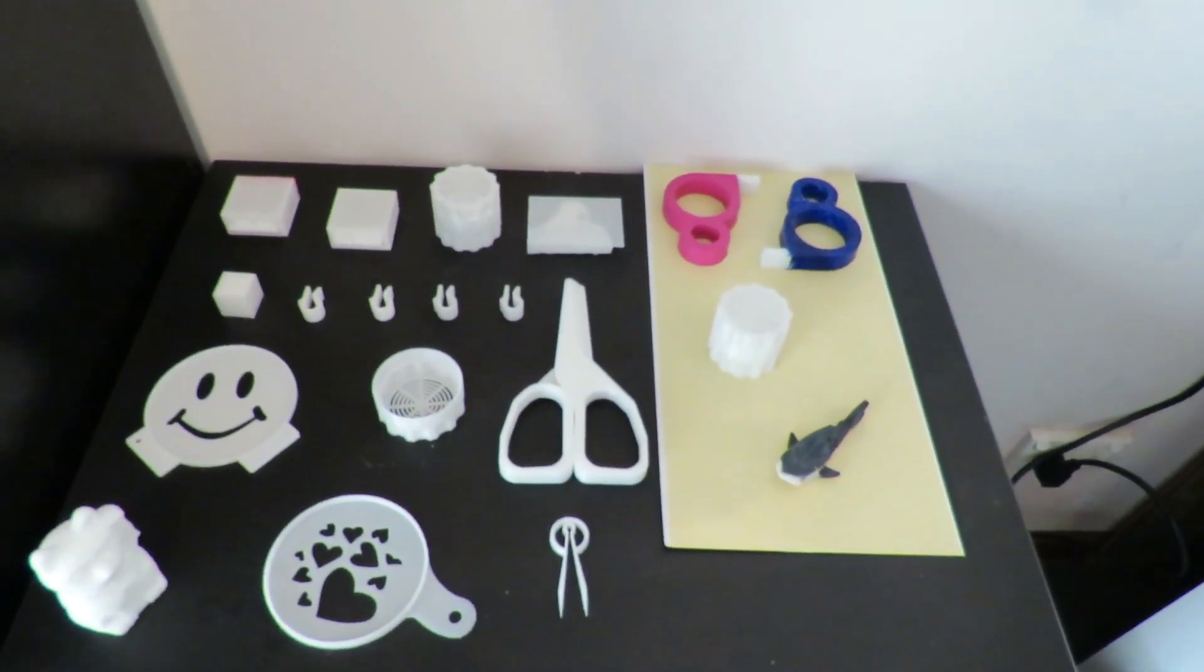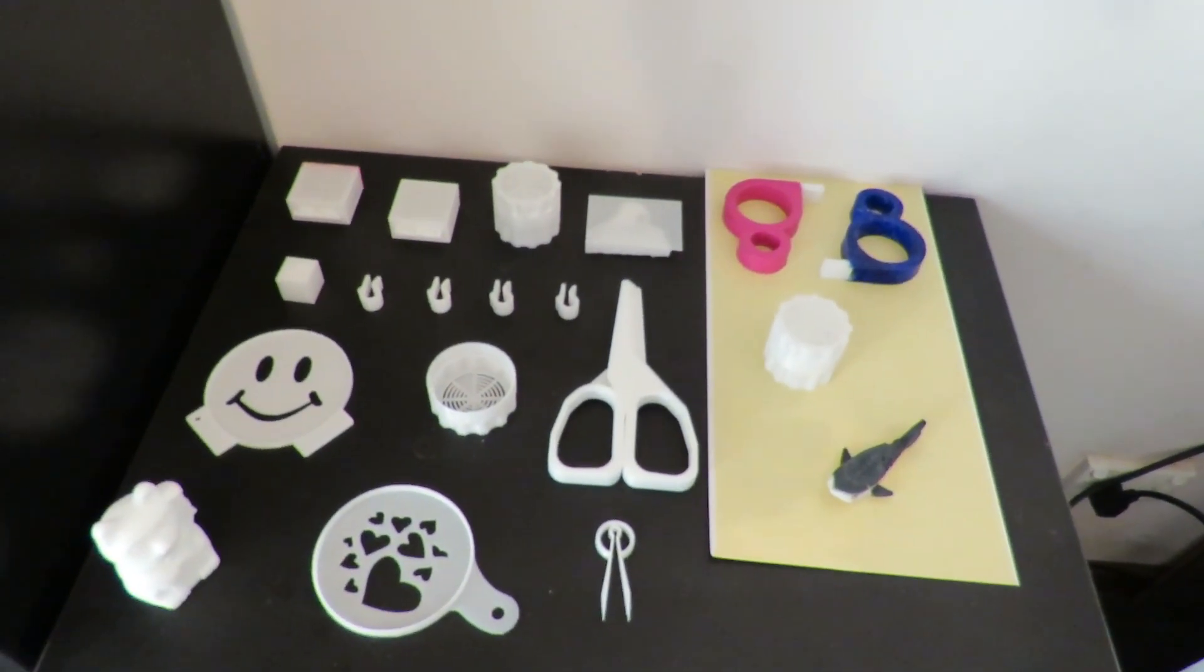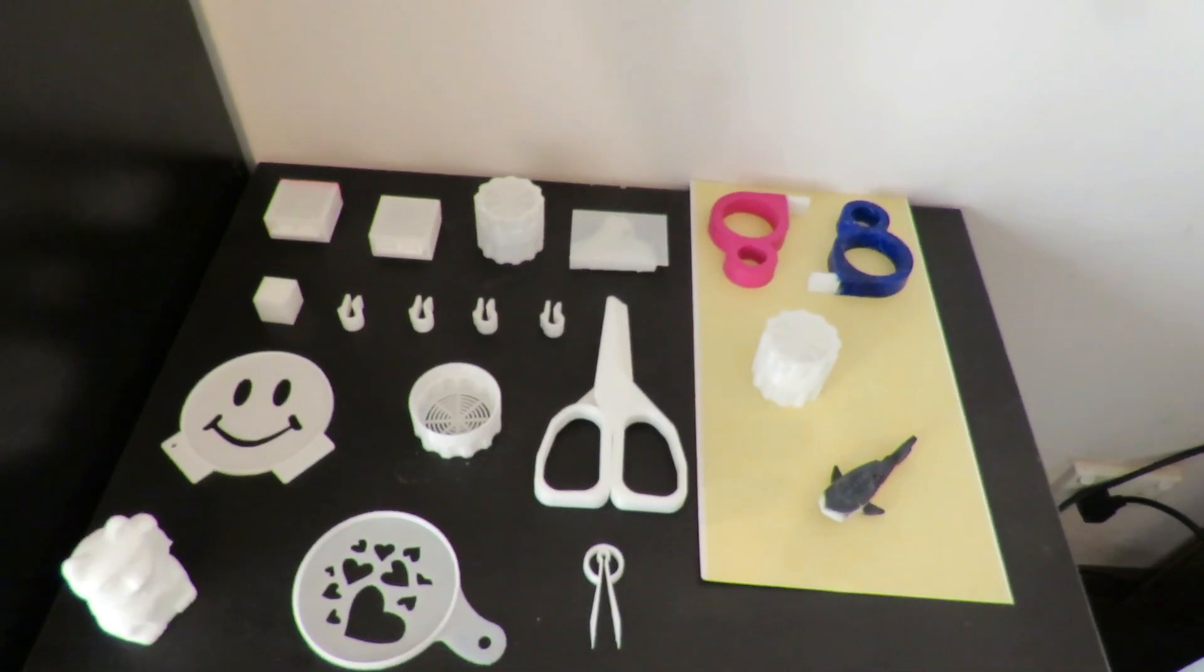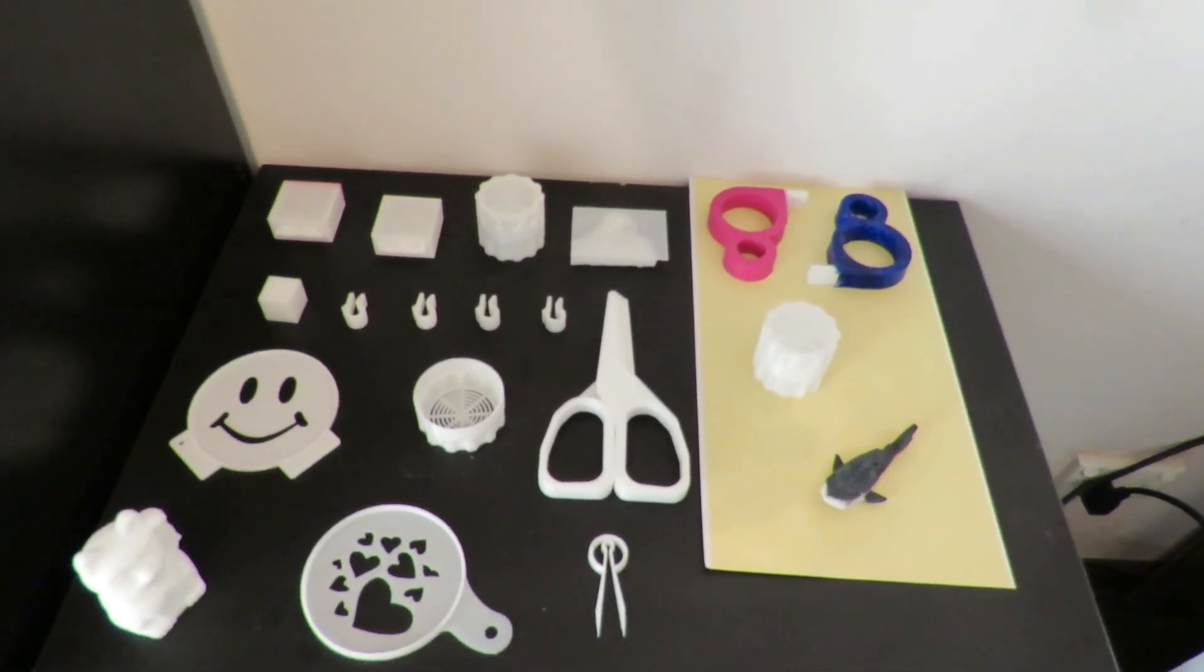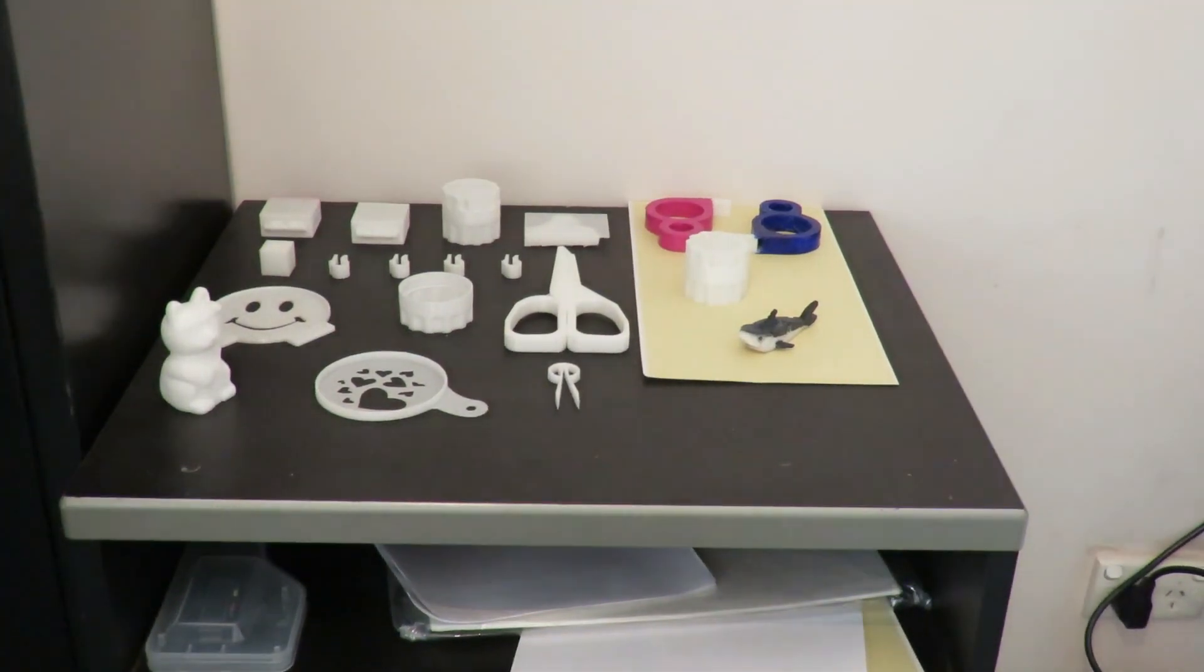This is the rest of the models that I printed on that 200g that was supplied by Creality. I'll pop the camera on a tripod so we can get a better view of things. I've now got the camera pointed to the little stack of goodies that I printed out.